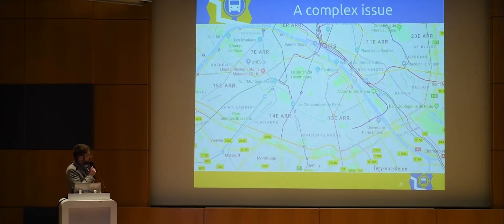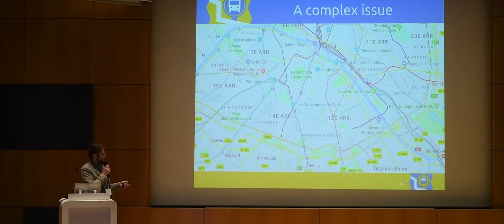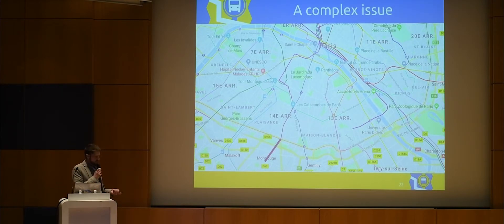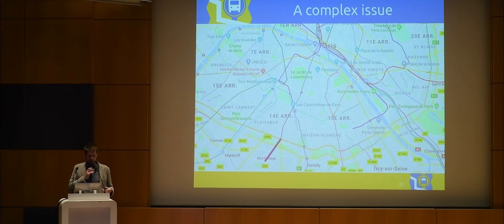For example, this is Google Maps in Paris. I'm living here in Montrouge, south of Paris. This part of the network is the Metro Line 4. It was extended in 2013 and it's still not on the map. What I want to say is, there is a lot of data to maintain and it's difficult for everybody.